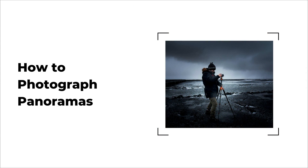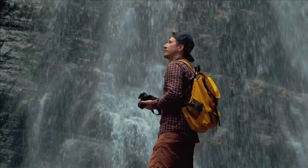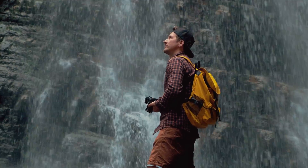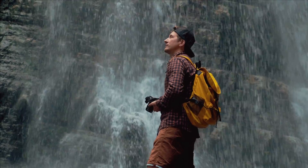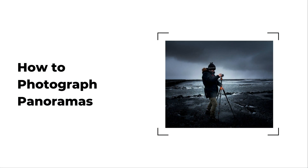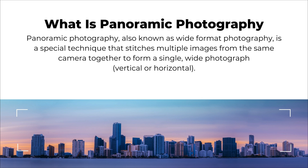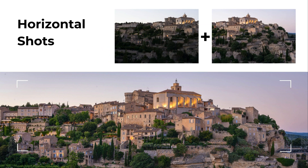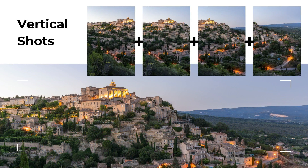In this next part, we'll very briefly talk about how to photograph panoramas. The reason we'll be brief is that in the next episode I'm going to take you out and show you how to photograph panoramas. So going back to basics — panoramic photography is a special technique that stitches multiple images from the same camera together to form a single wide photograph. When it comes to capturing multiple images, you have two options: horizontal shots or vertical shots.